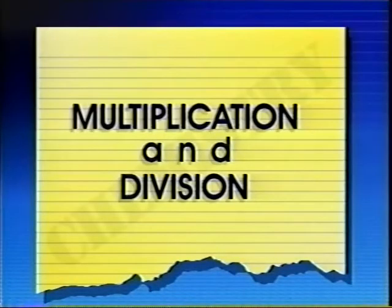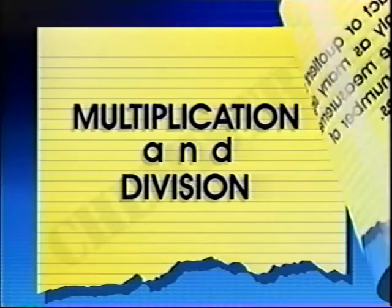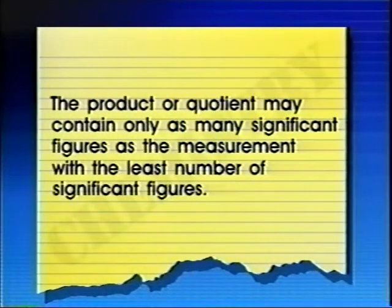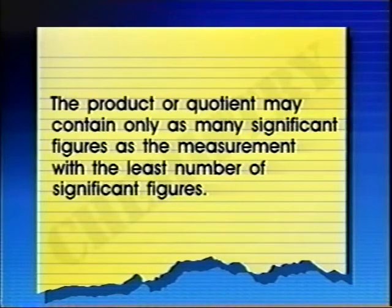The number of significant digits in a measurement is important, especially in calculations. The computed results of experiments can only be as accurate as the actual measurements. We have a general rule for calculations involving multiplication and division: the product or quotient may contain only as many significant figures as the measurement with the least number of significant figures.